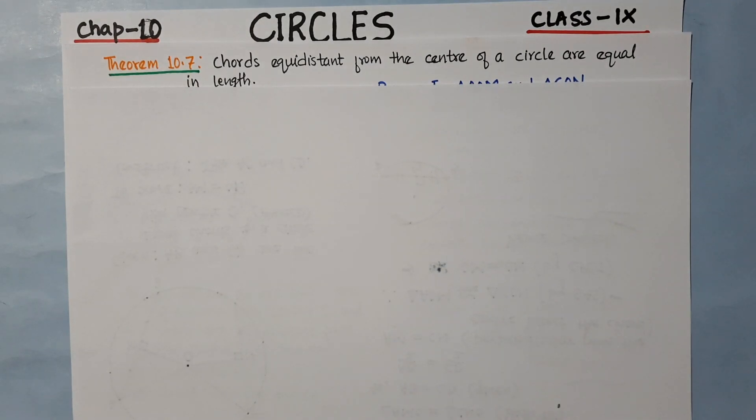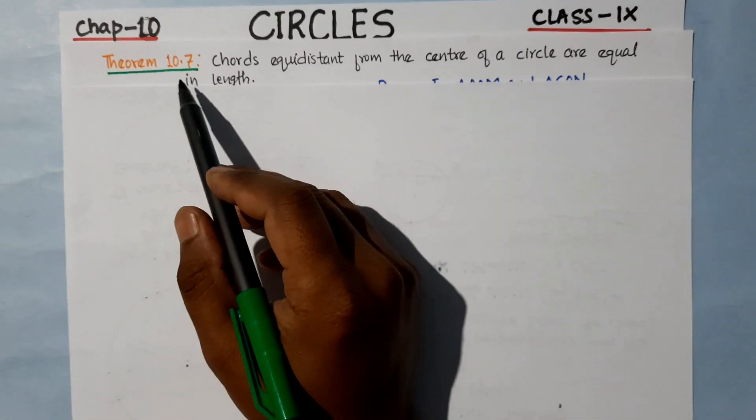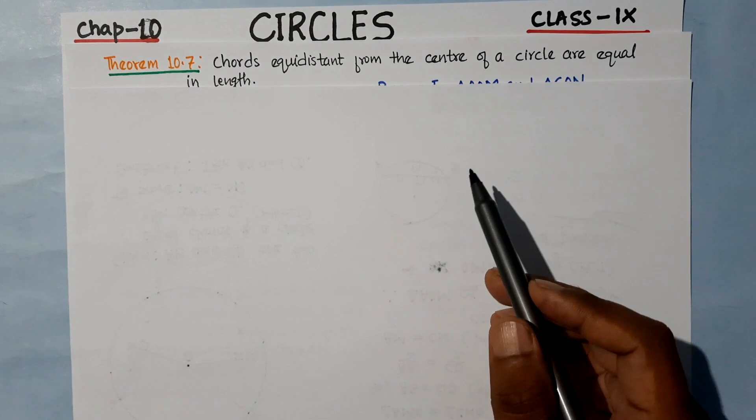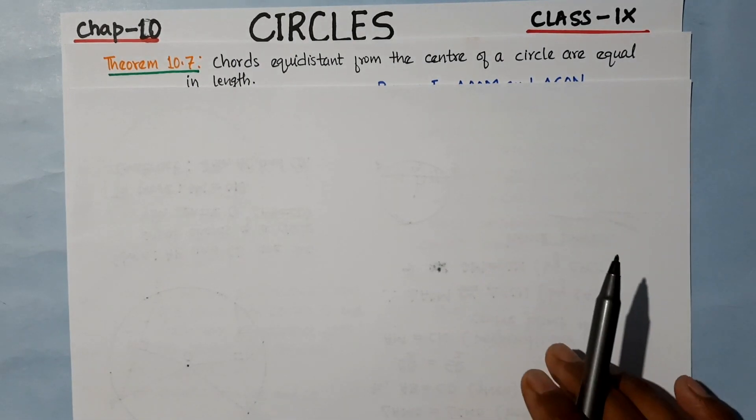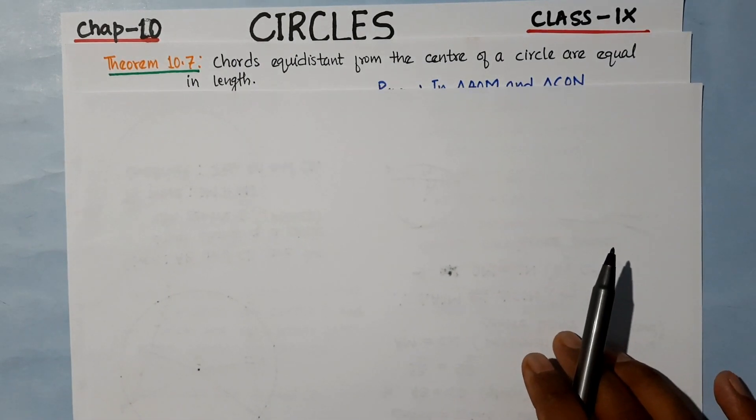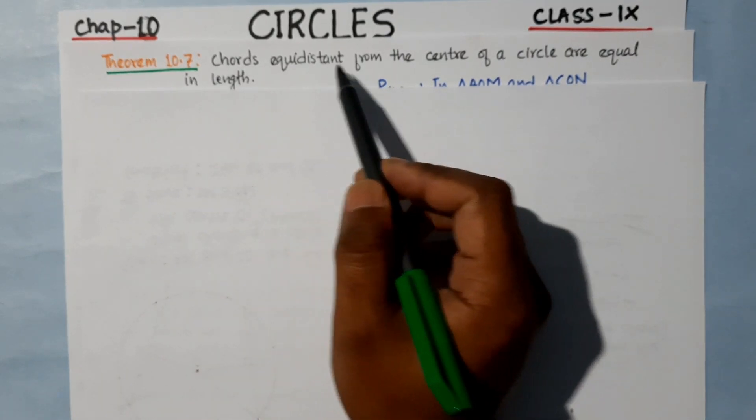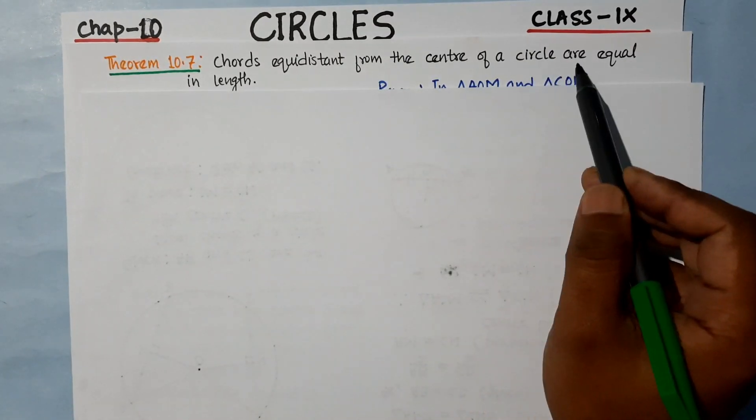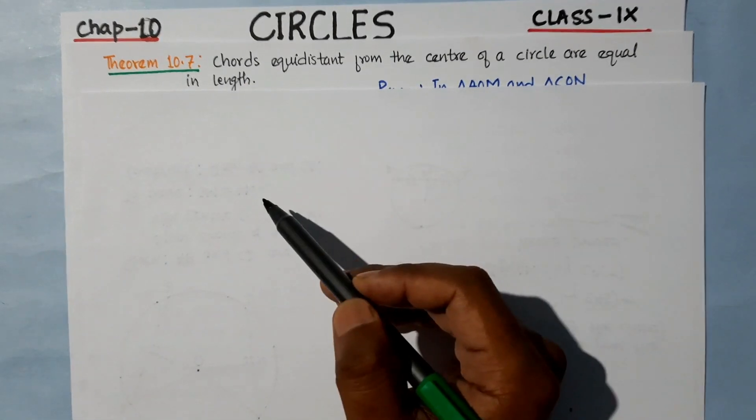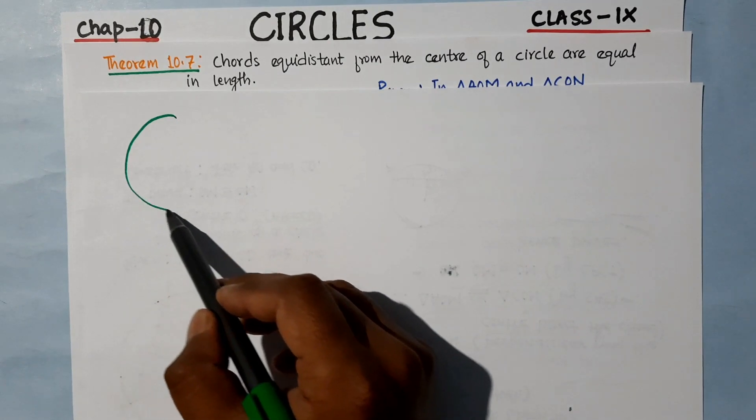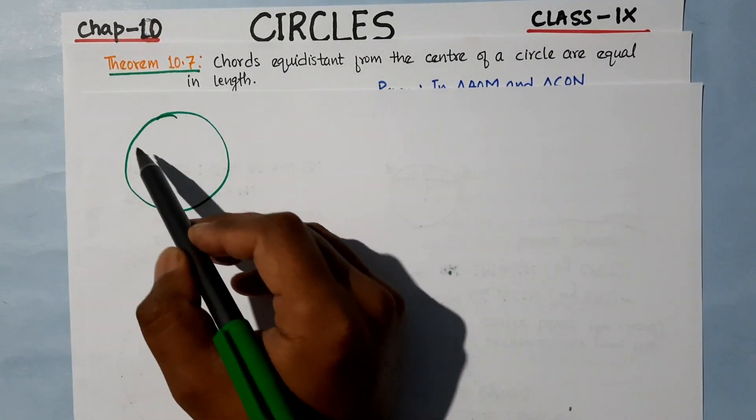Hello my dear children, welcome to our math class. In this class we will do Theorem 10.7 from the chapter Circles of Class 9. Let's read the statement of the theorem: Chords equidistant from the center of a circle are equal in length.